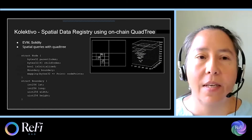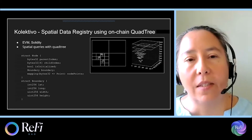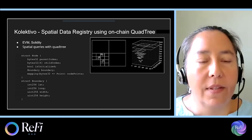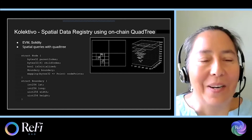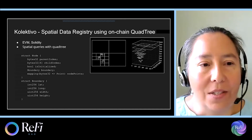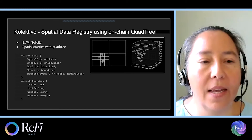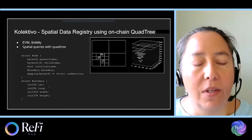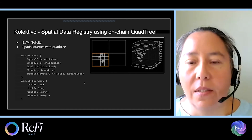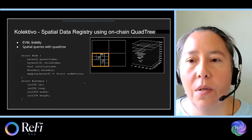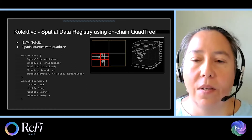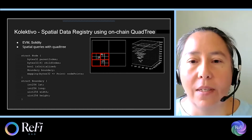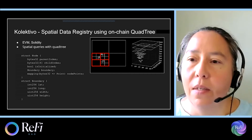For Colectivo, here's an example of how we're building the spatial data registry on-chain using a quadtree. You can see on the left some Solidity code where each node has a parent index and four children. We're tracking these boundaries with lat-longs — you can see a particular node, its parent node, and the four children nodes. This is a way of tracking specific data points within a quadtree structure.